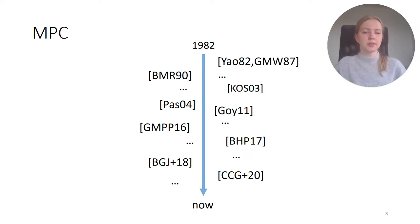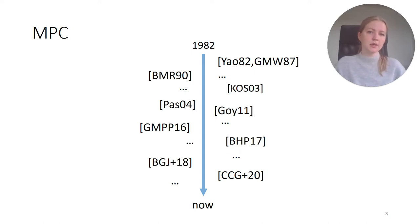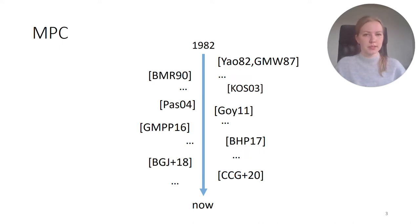Since its formal introduction in the 80s, there has been a lot of research on MPC — on its assumptions, its communication complexity and, important for us, its round complexity. We now know that four rounds are necessary and sufficient for MPC in the fully malicious case in the plain model.